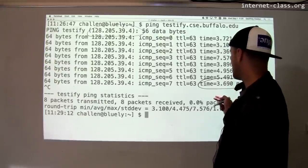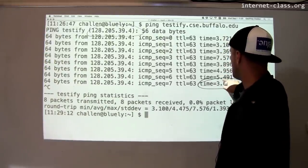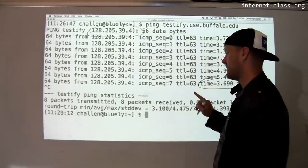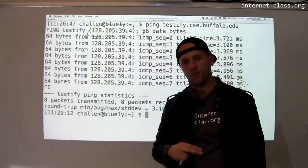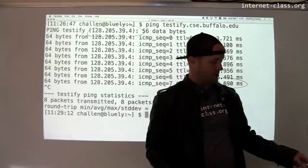And then this gives you some information about how long this took. So this is about, it sort of varies a little bit between three and up to maybe five, or actually this one was pretty slow, seven and a half milliseconds. That's how long it took to get data from one end to the other. And so this is commonly used to sort of identify reachability.